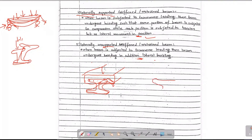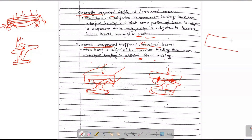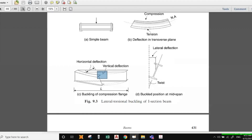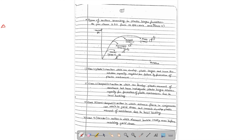We have to give this beam as a member connected to a member. The connection is generally bolted or welded. When the bolt connection fails, it will be laterally unsupported or laterally unrestrained beam. The bolt will load the bolt; it will be simply supported. It will be laterally supported if the bolt is a proper plastic or semi-plastic connection.